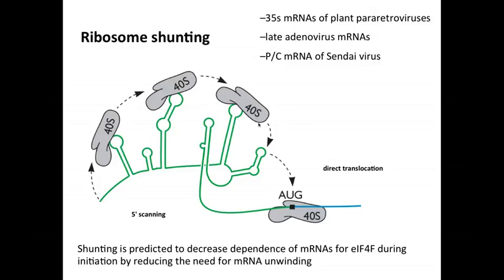And so you would ask, why do we do shunting at all? Well, it's predicted to decrease the dependence of any particular mRNA for the cap-binding protein complex, EIF4E and EIF4G, during initiation. So this mRNA doesn't have to be unwound because the ribosomes are passing over the secondary structure. So in cases where cap-binding proteins are limiting, which can happen at certain parts of the cell cycle, for example, or during virus infection, then this shunting would allow efficient translation in the absence of cap-binding protein.